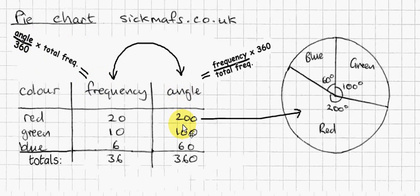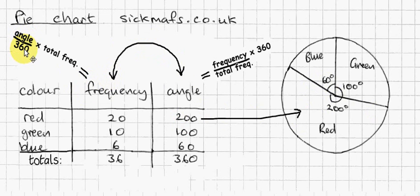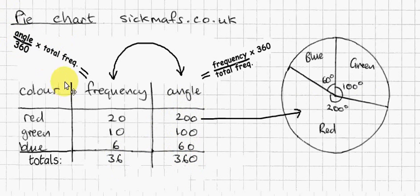And I can go the other way too. If I was told an angle and I wanted to know how many cars that actually represents — not just how many degrees, but how many cars — I take my angle, which I can measure off the pie chart, and to get back to the frequency, I do the angle out of 360 times the total frequency. The total frequency is 36. So 200 out of 360 times 36 gives me 20 — back to the red car frequency.